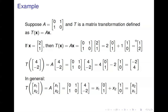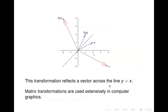Looking back at the examples: (2, 1) went to (1, 2), and (4, -2) went to (-2, 4) — so this transformation is swapping the order of the elements. Looking graphically, (2, 1) maps to (1, 2) and (4, -2) maps to (-2, 4), and you can see that this transformation is reflecting a vector across the line y = x. This is a standard sort of thing in computer graphics, and matrix transformations are really the fundamental element in computer graphics.